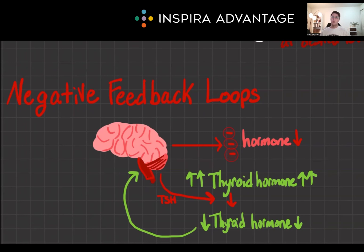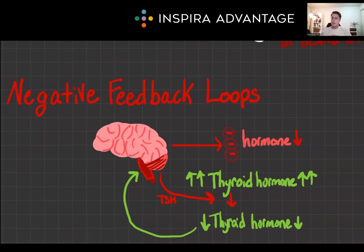For instance, consider the thyroid hormone. When levels are high, the brain reduces levels of TSH — the thyroid stimulating hormone — to bring levels back down to normal. This kind of loop prevents excess and deficiencies, which keeps our body functioning and running smoothly. Because if we didn't have this, we would just have a ton of thyroid hormone all the time. And what happens when we have way too much thyroid all the time? Hyperthyroidism.